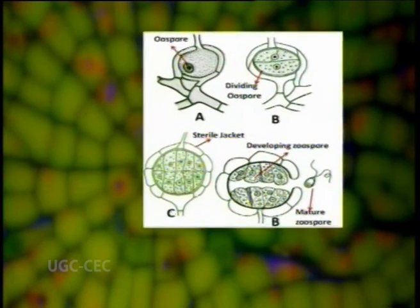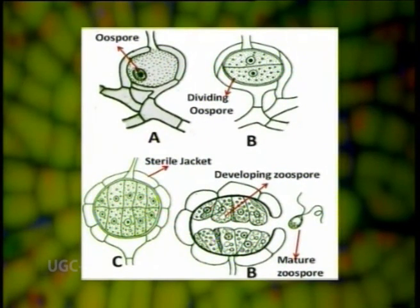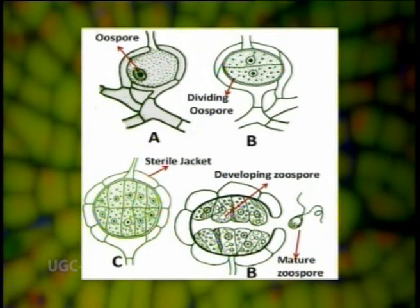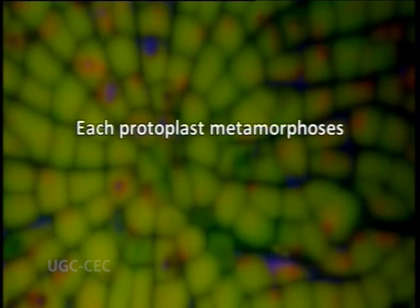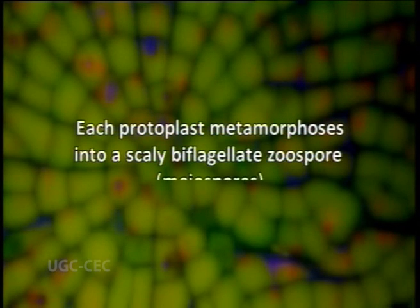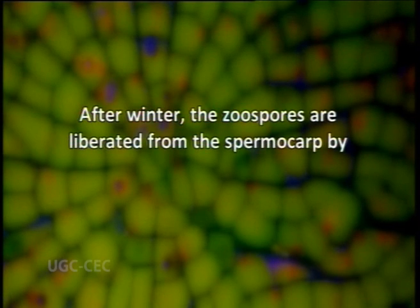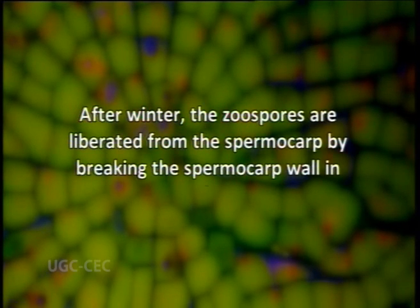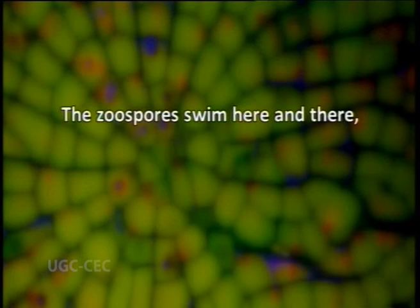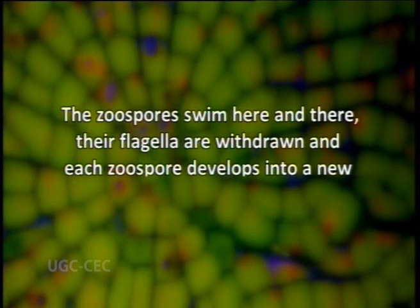On the return of favorable conditions, the content of the sporocarp again turns green. The nucleus of the zygote divides meiotically, followed by other mitotic divisions. In this way 8 to 32 protoplasts are developed, each protoplast metamorphosing into a scaly biflagellate zoospore or meiospore after winter. The zoospores are liberated from the sporocarp by breaking of the sporocarp wall in an irregular way. The zoospores swim about, their flagella are withdrawn, and each meiospore develops into a new thallus.